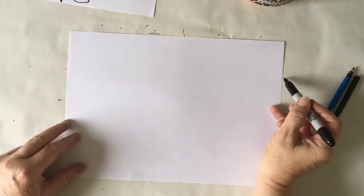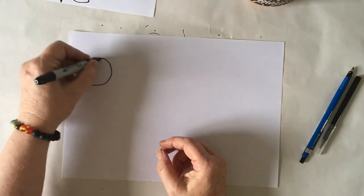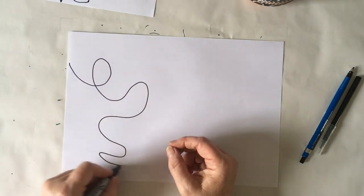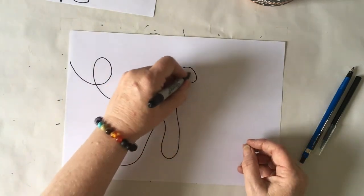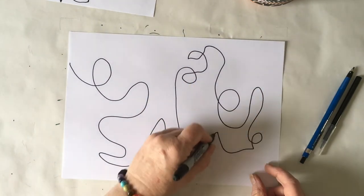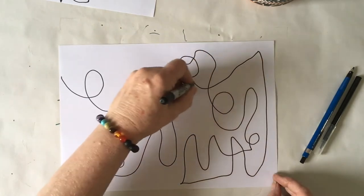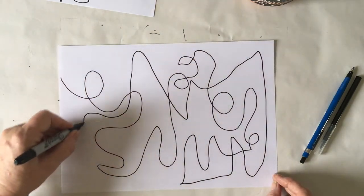And the thing with it is, if you want some different variety, you can do it with your non-dominant hand. And your non-dominant hand will tend to give you different shapes and go in a different direction than you would normally do with your conscious mind.